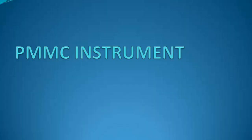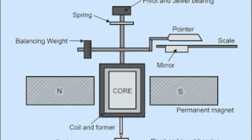The instruments which use a permanent magnet for creating a stationary magnetic field, between which the coil moves, are known as permanent magnet moving coil or PMMC instruments. They operate on the principle that a torque is exerted on the moving coil placed in the magnetic field of the permanent magnet. The PMMC instrument gives accurate results for DC measurement.